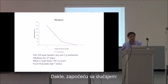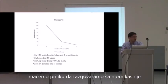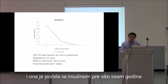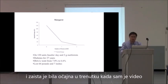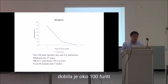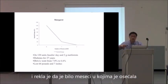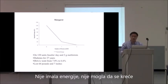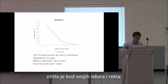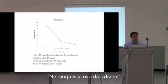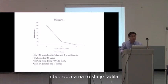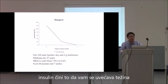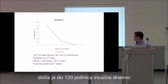Here's a case: Margaret had been diagnosed with diabetes for 27 years and started insulin about eight years ago. She was desperate — she had gained about 100 pounds after starting insulin, sometimes feeling like she was putting on 10 pounds a month. When I saw her, she could barely drag herself in, had no energy, couldn't move. No matter what she ate or did, the weight kept coming on. She wound up on 120 units of insulin a day, because insulin makes you gain a lot of weight.